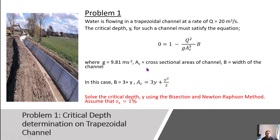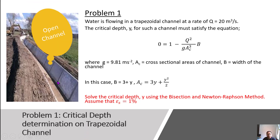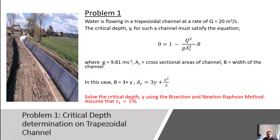This is a problem taken from the open channel problem. An open channel section will have a certain value that we call the critical depth of that channel. The water will flow with a certain quantity Q inside this channel, and at a certain depth — which we call critical — the engineer has to determine it.